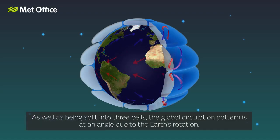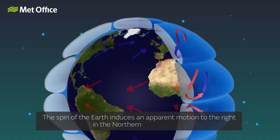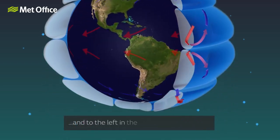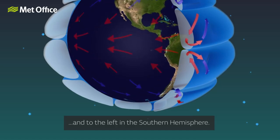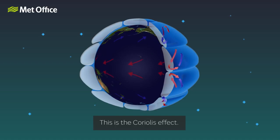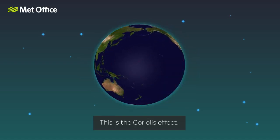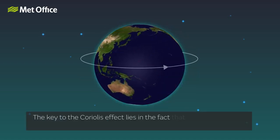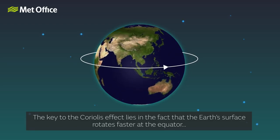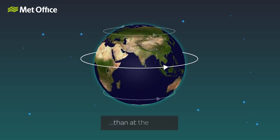As well as being split into three cells, the global circulation pattern is at an angle due to the earth's rotation. The spin of the earth induces an apparent motion to the right in the northern hemisphere and to the left in the southern hemisphere. This is the Coriolis effect. The key to the Coriolis effect lies in the fact that the earth's surface rotates faster at the equator than at the poles.